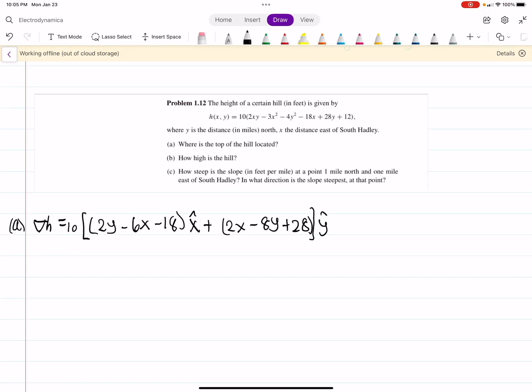Okay, now what we need to do is set up a system of equations here. So for our first one, we have 2y minus 6x minus 18, and the top of the hill is going to be where our derivative is equal to 0. That's our maximum. So we set that equal to 0. And likewise, what we have is 2x minus 8y plus 28 equals 0.